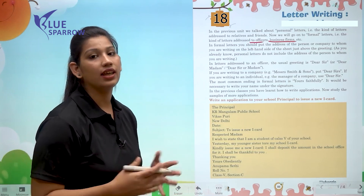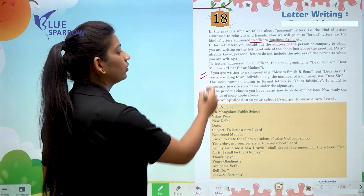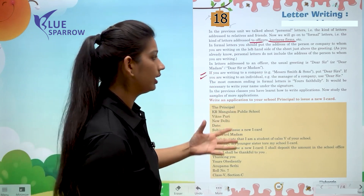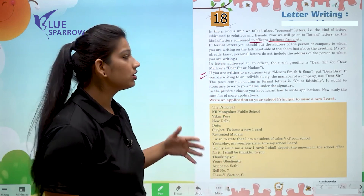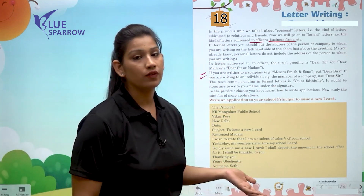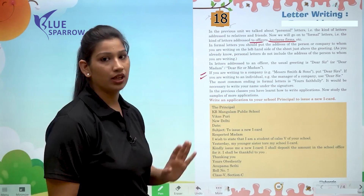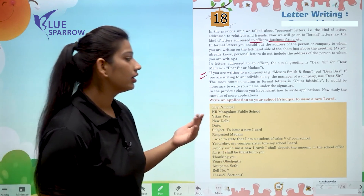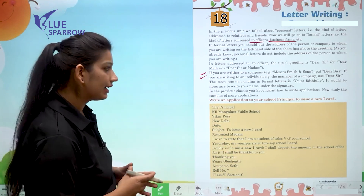If you are writing to a company like Mr. Smith and Sons, you put 'Dear Sirs.' If you are writing to an individual, you write 'Dear Sir' or 'Dear Ma'am.' For the closing line, you use 'Yours Faithfully' — you can also use 'Yours Obediently.' These words can be used.